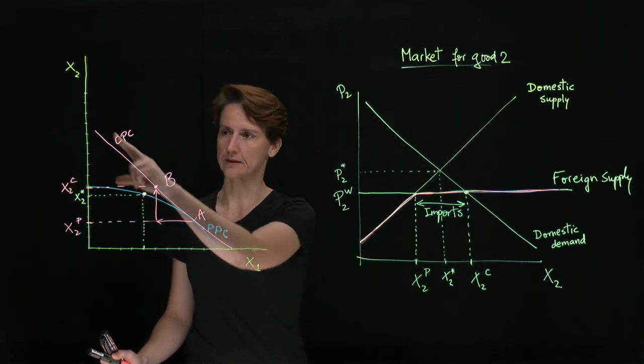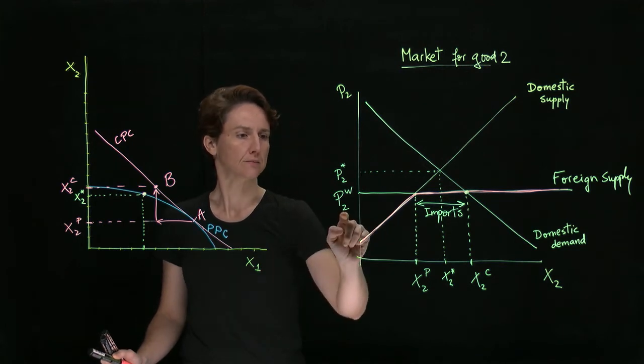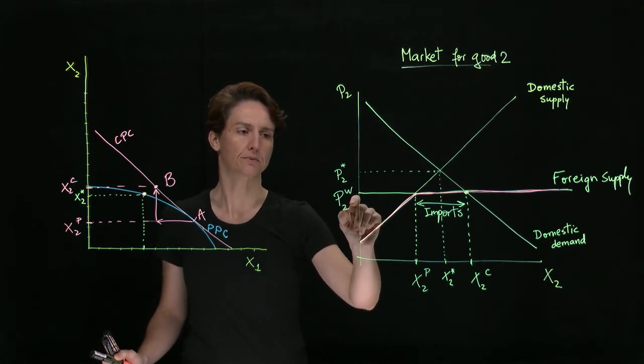If the ratio of prices internationally is 1 to 1, then P2W simply equals P1W.